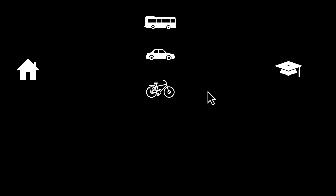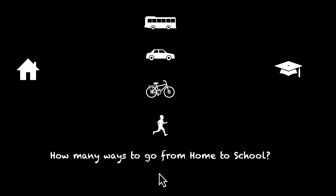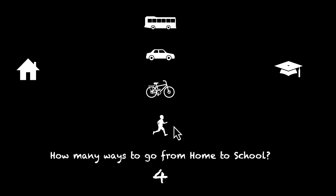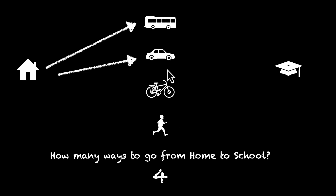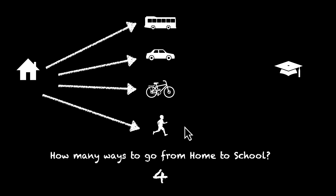Let's say you want to go from your home to your school and you have a few options. You have a bus, you have your car, you have your bicycle, and you can walk from your home to school. These are your four options. So how many ways to go from home to school? There are four options and four jumps to your mind because you can see four things in front of you. Notice the word that I'm using — I'm using the word 'or'.